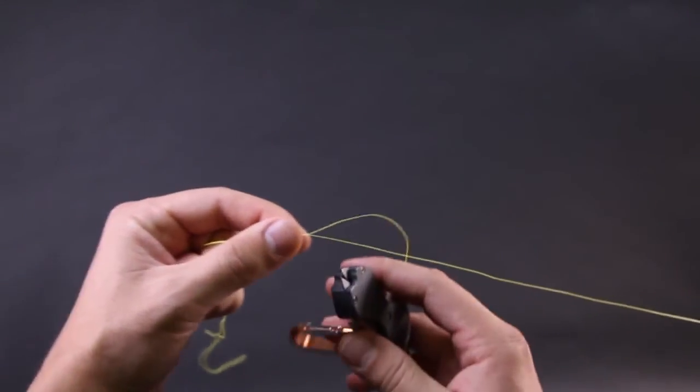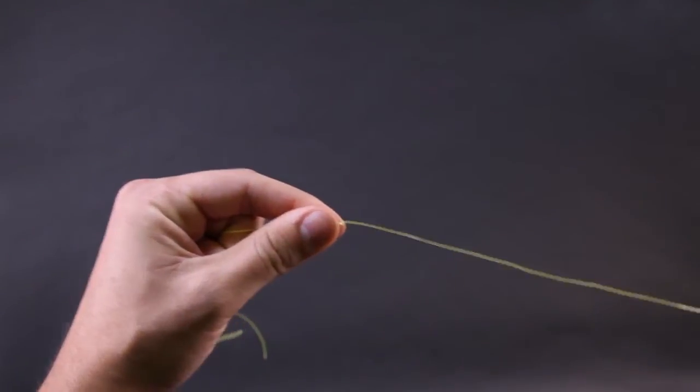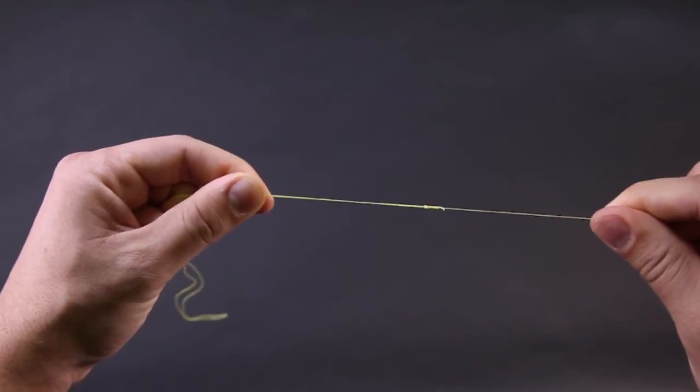Lastly just cut off the tag end and you're finished. Keep in mind that the spider hitch is a strong knot. Not quite as strong as the bimini but it does go through the guides of your rods very easily.